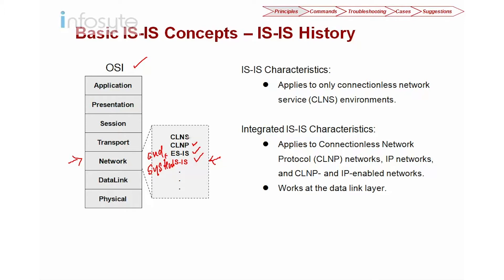ISIS was originally meant for Connectionless Network Services — we call it CLNS — and it applies to a protocol called CLNP, Connectionless Network Protocol. Some characteristics of ISIS: ISIS actually works at the data link layer as well. When we look into integrated ISIS, we are running ISIS in a TCP/IP environment, so we call this integrated ISIS. In our study, we are going to look into purely IP-based and not CLNS or CLNP.